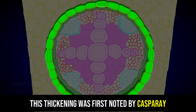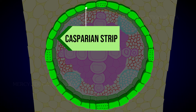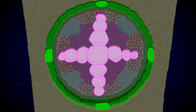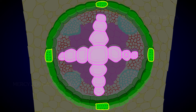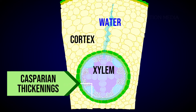This thickening was first noted by Caspari, so these thickenings are called Casparian strips. These Casparian strips are absent in the endodermal cells which are located opposite to the protoxylem elements. These thin-walled cells without Casparian strips are called passage cells, through which water and minerals are conducted from the cortex to the xylem elements. Water cannot pass through the endodermal cells due to the presence of Casparian thickenings.